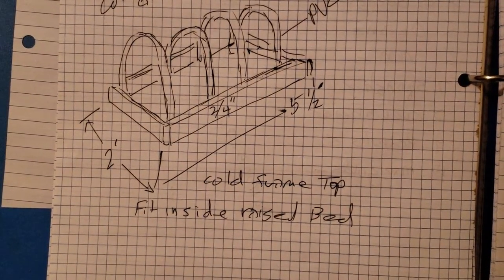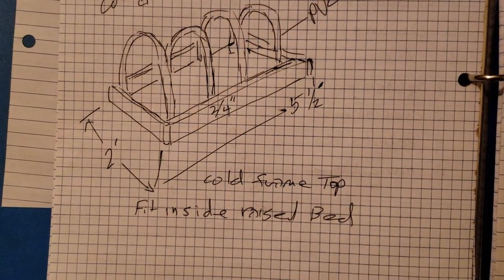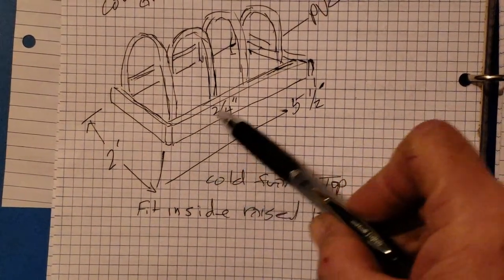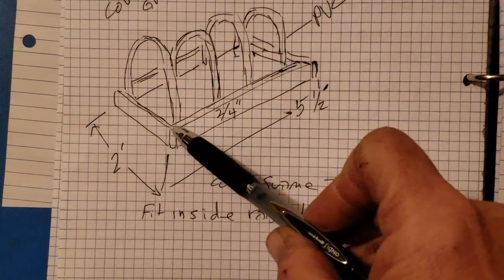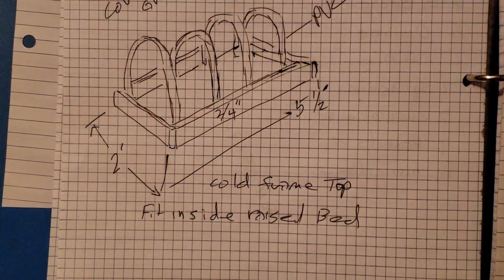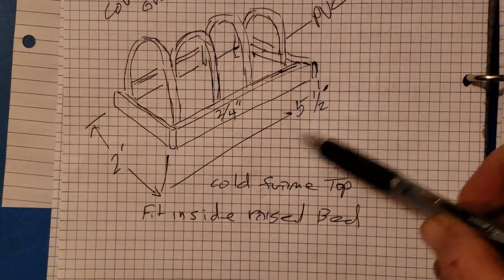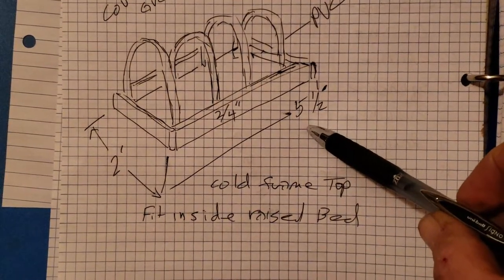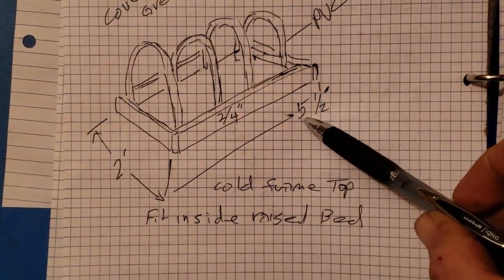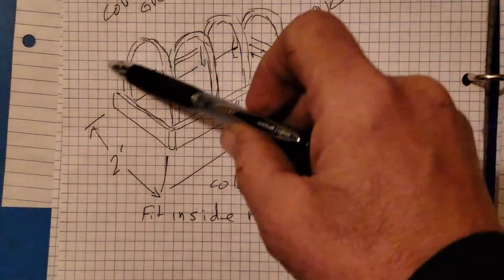Well okay, now here's what I've got. Now I'm just going to build a basic two by four square and the measurement length is going to be about five and a half. I don't know exactly, and I'll explain that in a minute.